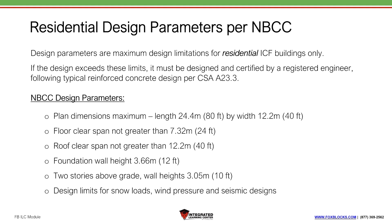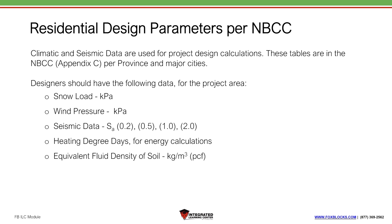The design parameter limits are: plan dimensions maximum 80 foot by 40 foot; floor clear span 24 foot; roof clear span 40 foot; foundation wall height 12 foot; two stories above grade, with a basement permitted underneath, so you could have basement, main floor, and second floor each at 10-foot floor height. Design limitations also apply for snow loads, wind pressure, and seismic design. All climatic and seismic data for design calculations — snow load, wind pressure, seismic data, heating degree days, and equivalent fluid density of soil for backfill — are found in Appendix C of the National Building Code.